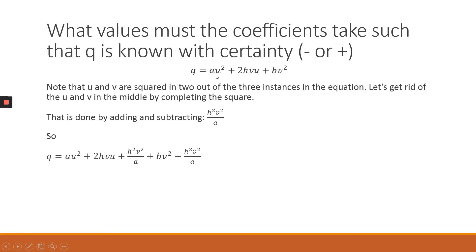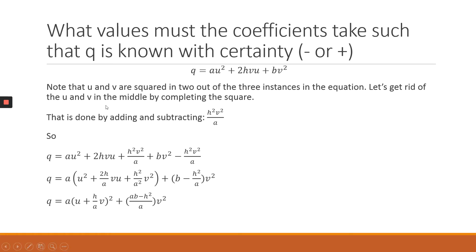Adding and subtracting h²v²/a to the appropriate elements allows us to factor out a and v, creating an equation where both u and v appear squared. Since u and v are always squared, they are always positive. Therefore, what drives the sign of q will be the coefficient variables a, b, and h.